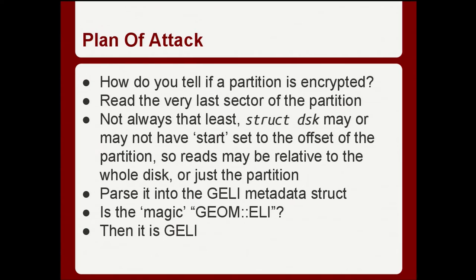The first problem to solve was: how do I tell if this partition is encrypted or not? Luckily, with the GEOM system in FreeBSD, the very last sector of a GEOM-managed partition contains the metadata. So we look at the very last sector on the disk — which turns out to be a little harder to find than you'd think — and parse it looking for the string 'GEOM ELI' in a specific place. If it has that, we know it's GELI-encrypted; if not, we don't have to worry about it.